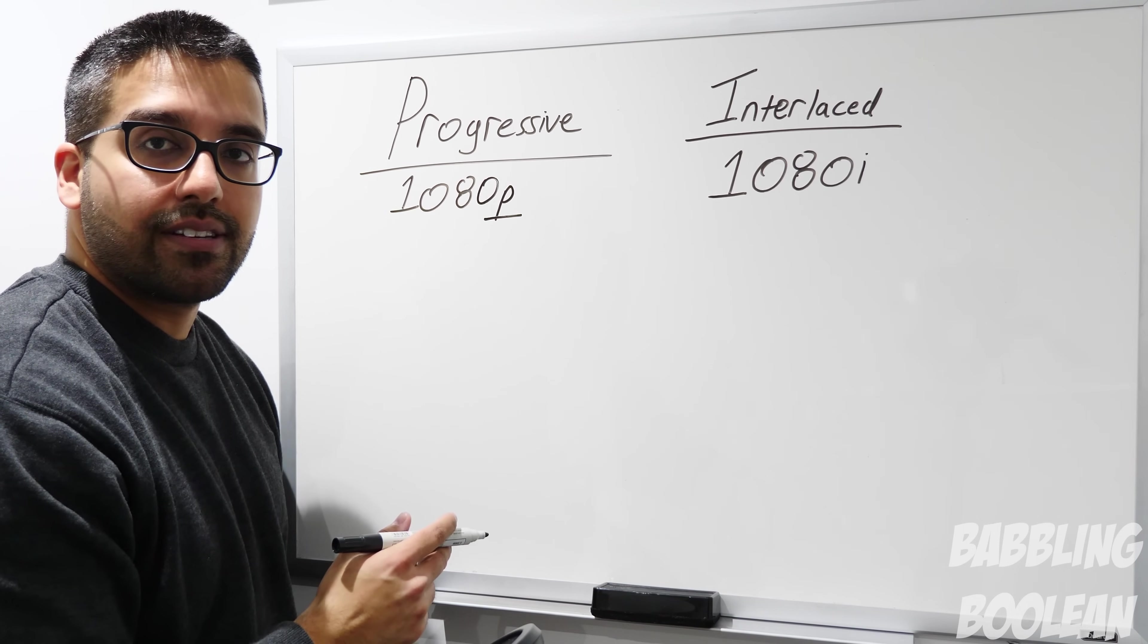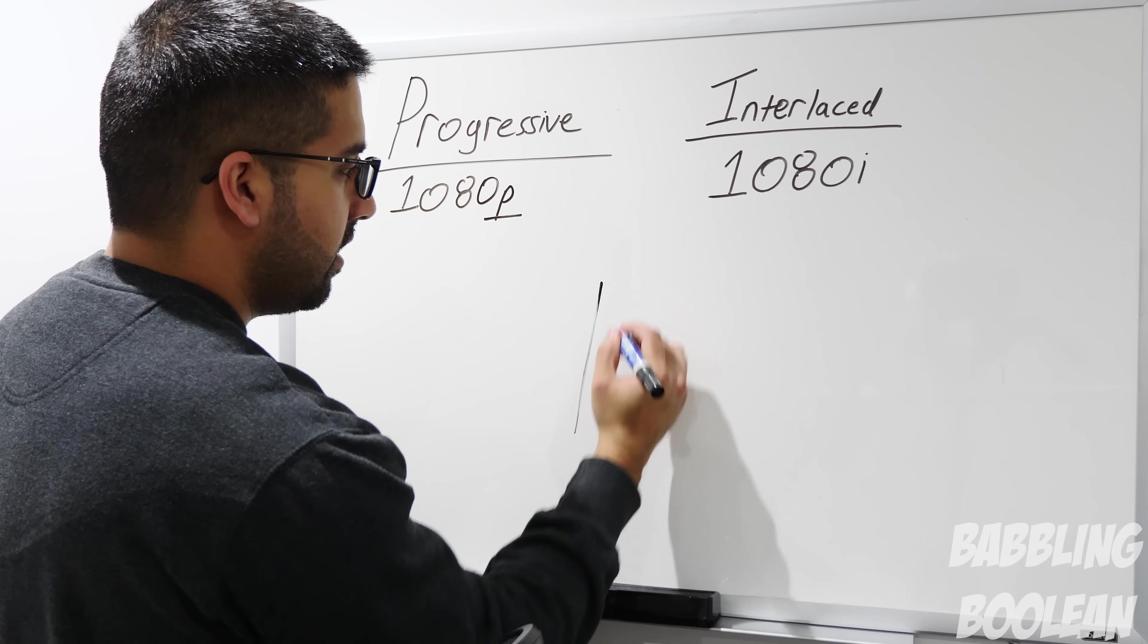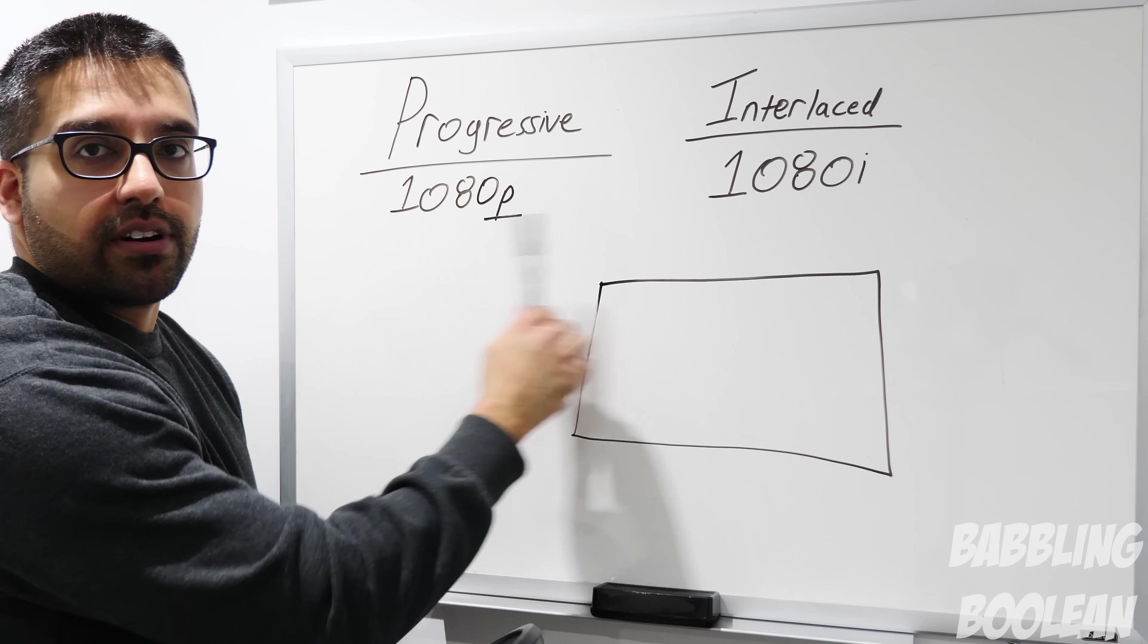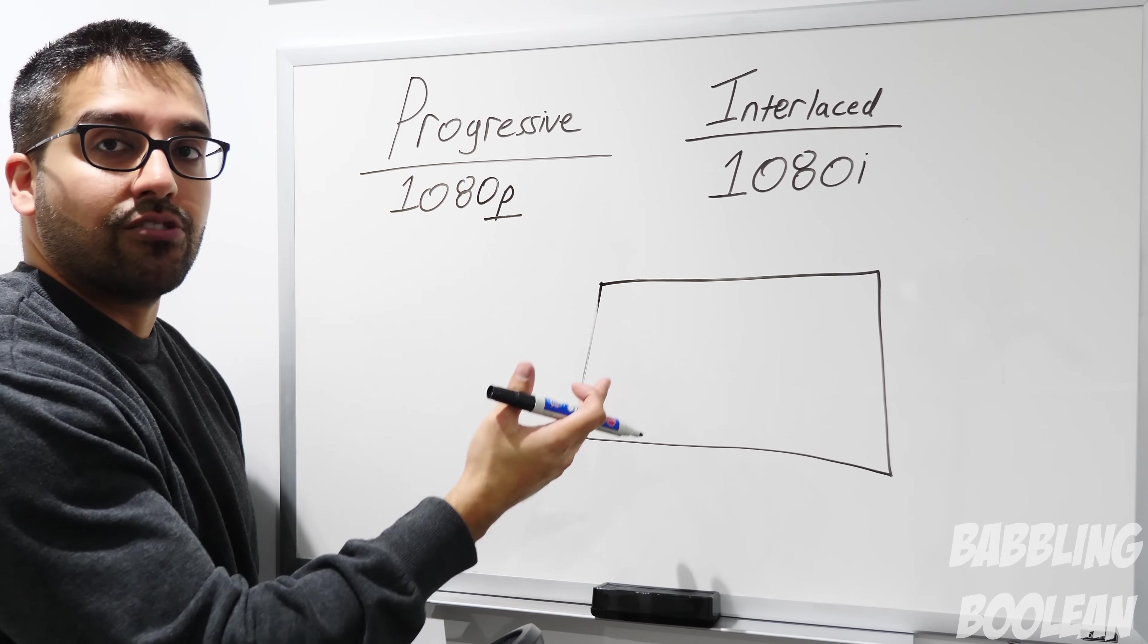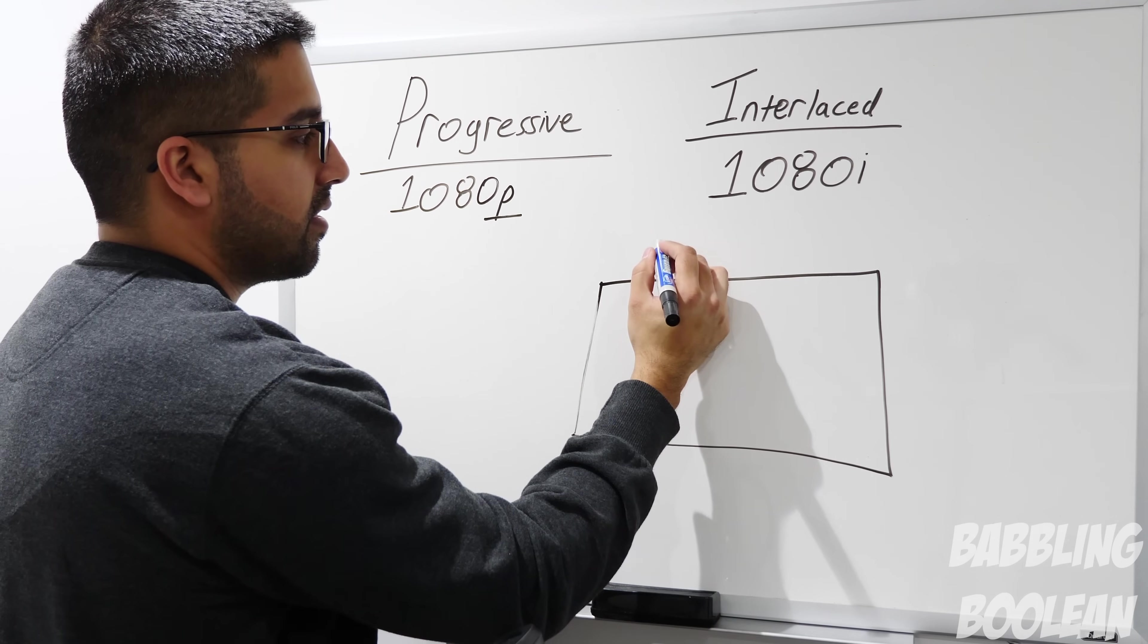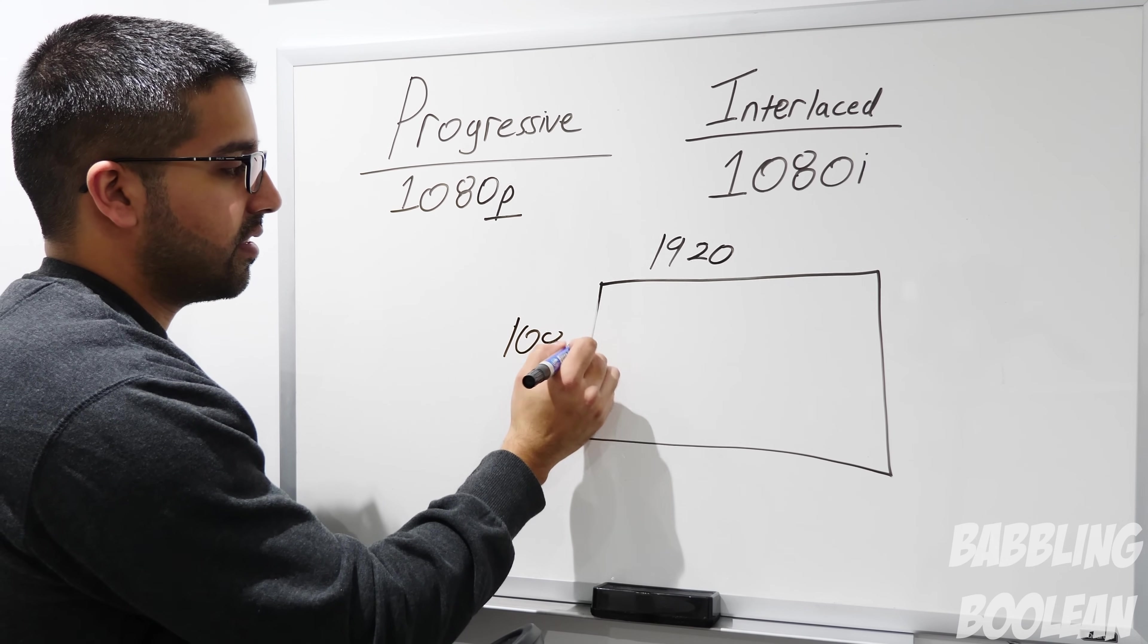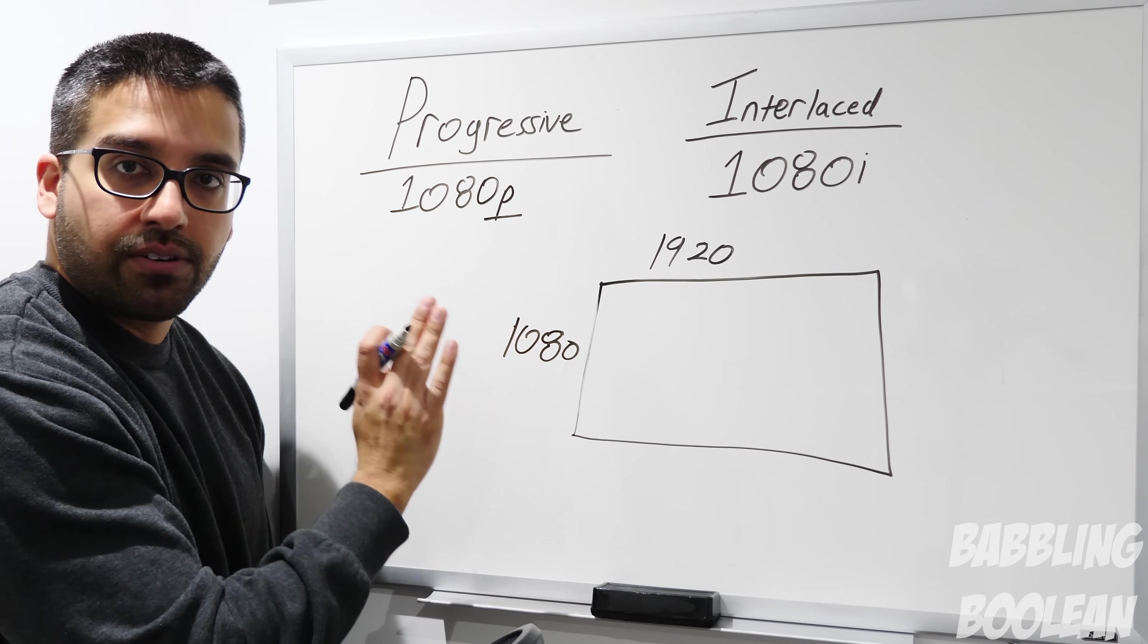I'm going to start with interlaced and we want to have a TV. We don't care what size it is, we just want a TV. We're sticking with the number 1080 for this whole video. The number 1080 derives from the resolution of the TV. 1080 gets the resolution of 1920 by 1080. This is where pixels come in.